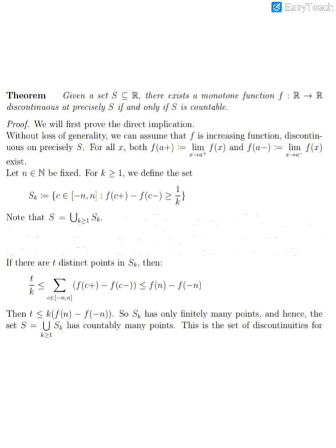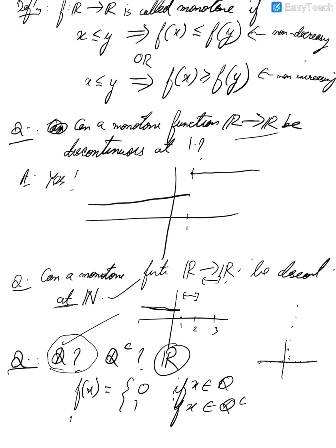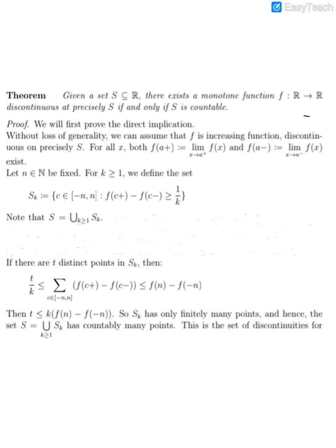Here is the theorem: Given a set S ⊆ R, there exists a monotone function f: R → R discontinuous at precisely S if and only if S is countable. This is actually a remarkable result because it says that Q is acceptable but Q complement is not, R is also not. This is a really nice result and we will prove it here. The proof isn't difficult but it uses a few facts from a first course in analysis. This talk is for college students and I hope you have done a first course in analysis.